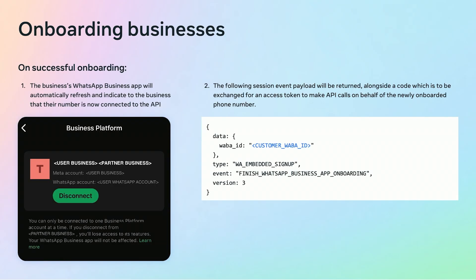After you have successfully onboarded onto the API solution, the left screen will be seen in the WhatsApp business app. Also, an event payload will be returned. This payload includes a WhatsApp business account ID and a code that can be exchanged for an access token. With this information, you can then perform Graph API calls such as sending messages.